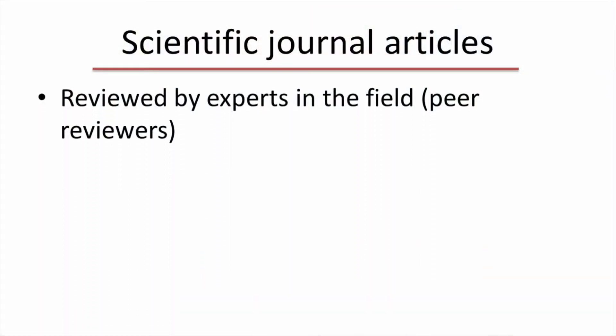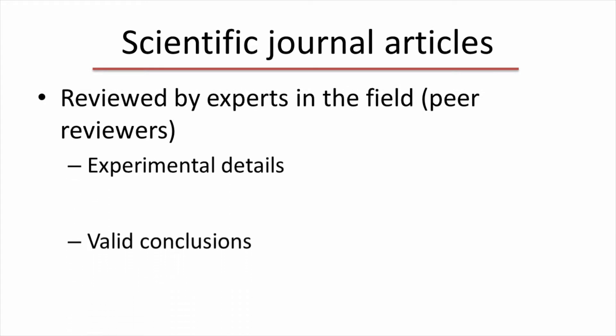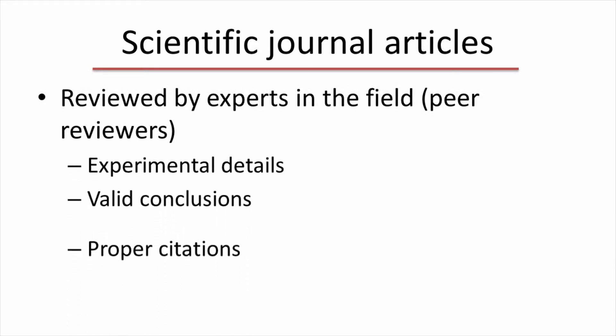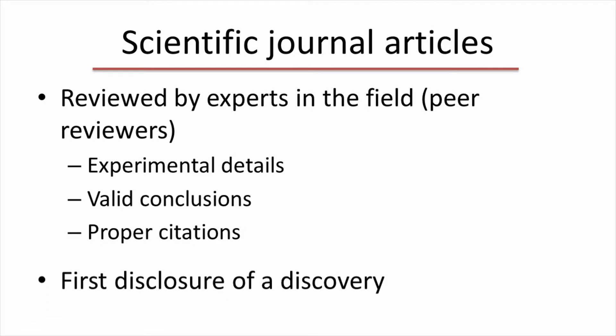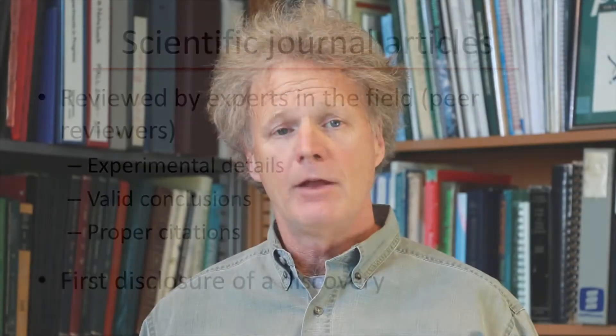Scientific journal articles are fundamentally different from Wikipedia articles, because they have been formally read, evaluated, and critiqued by two or more experts who can vouch for the validity of the results. Peer reviewers of journal articles determine if the experiments were done properly, whether the conclusions are valid, and whether the authors appropriately cited the works of others. An important feature of journal articles is that they represent the first disclosure of a scientific finding. Therefore, when a scientist publishes an article, they're considered the discoverer of that information and can lay claim to its intellectual property.